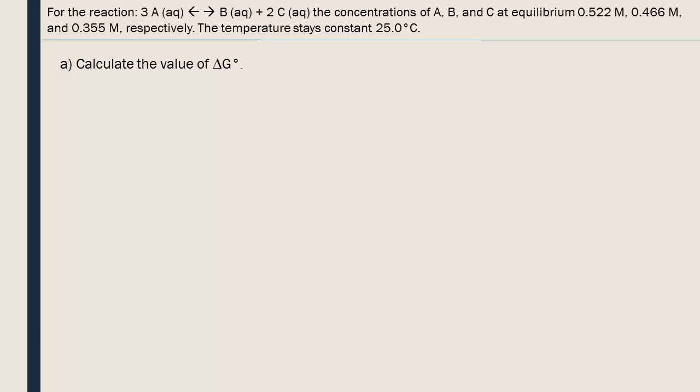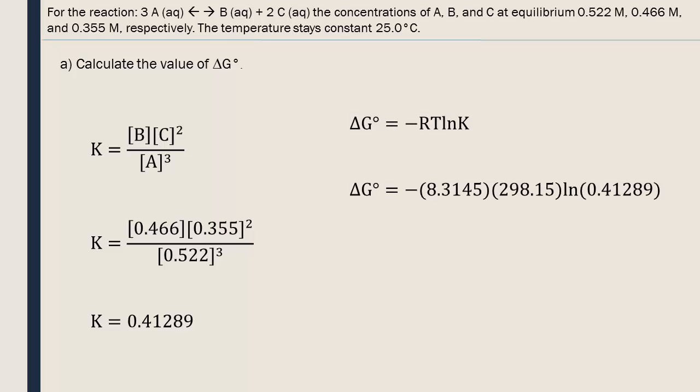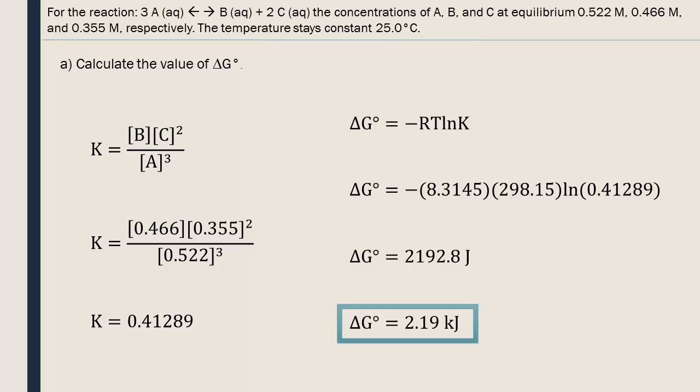Since the given concentrations are already at equilibrium, we don't need to use an ice table. We simply need to find the equilibrium constant. The concentrations of the products are multiplied together and then divided by those of the reactants, with their coefficients becoming exponents. Next, we insert our equilibrium constant into our formula that relates the equilibrium constant to the standard free enthalpy value. We get an answer in kilojoules with three significant digits.